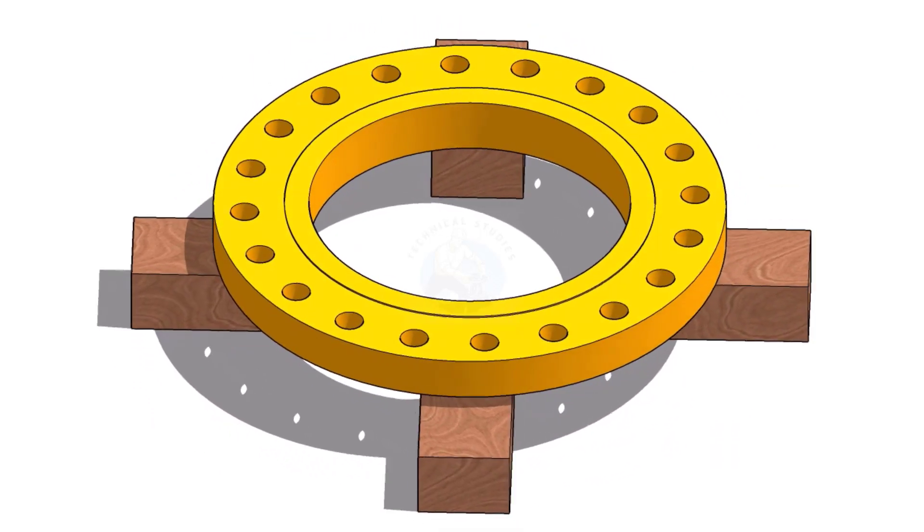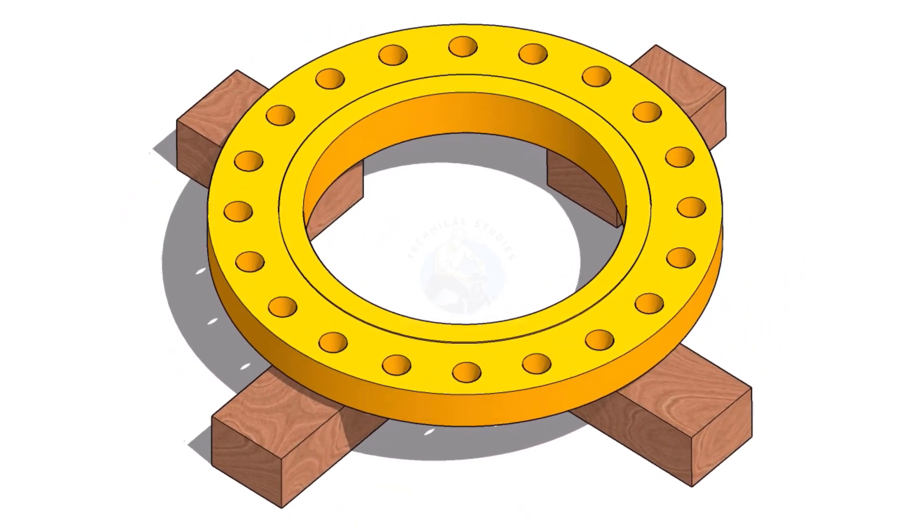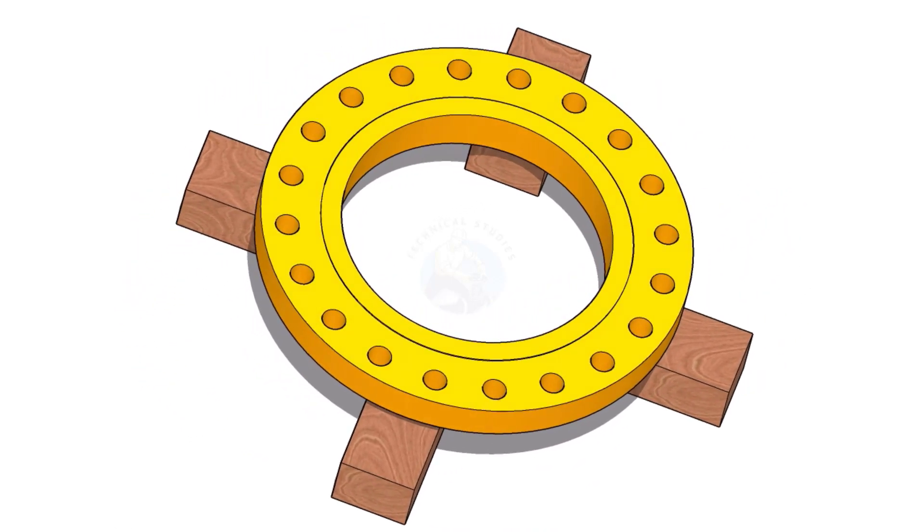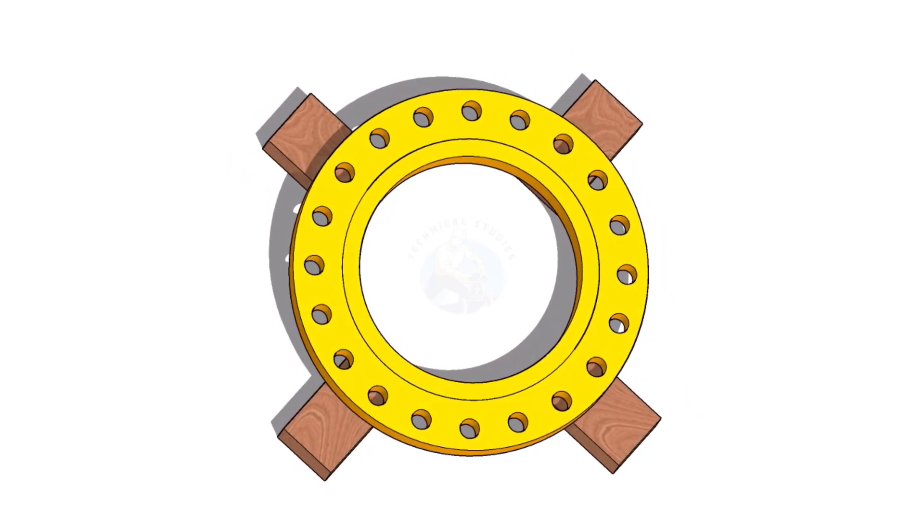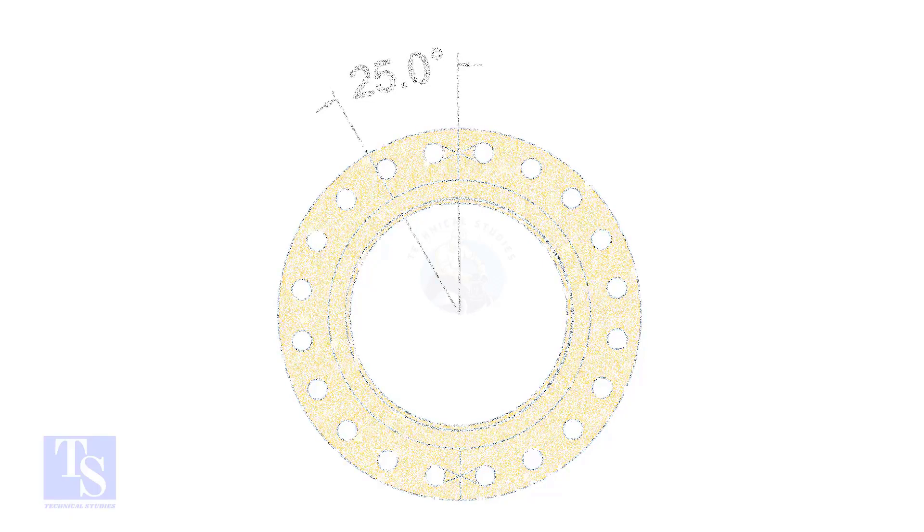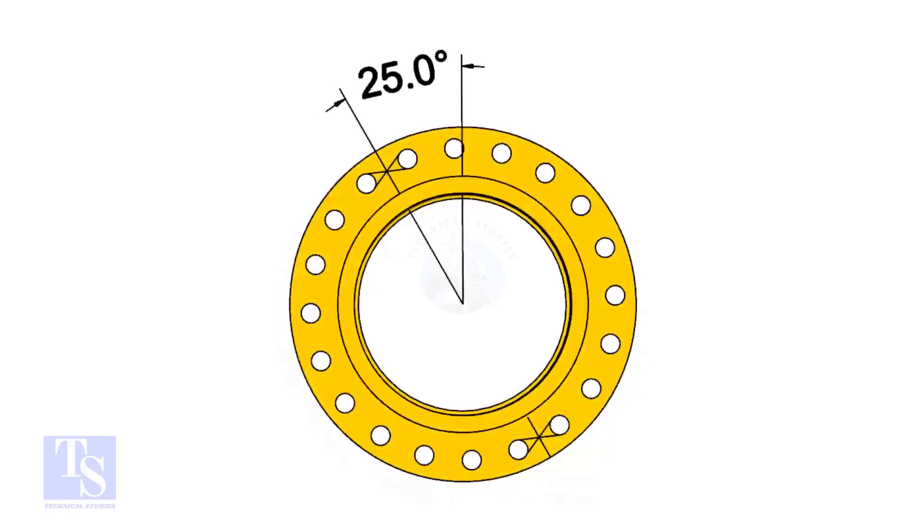I choose a slip-on flange for the example, but the calculation and the procedure are same for all flanges. The pipe and the flange size is 16 inch, and the flange will rotate 25 degree anticlockwise. Hope you all know the difference between clockwise and anticlockwise rotation.